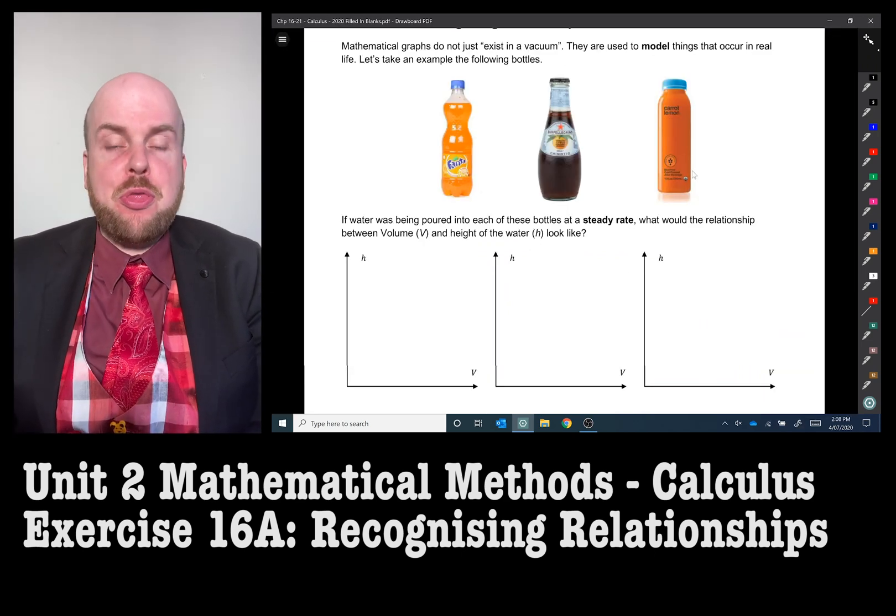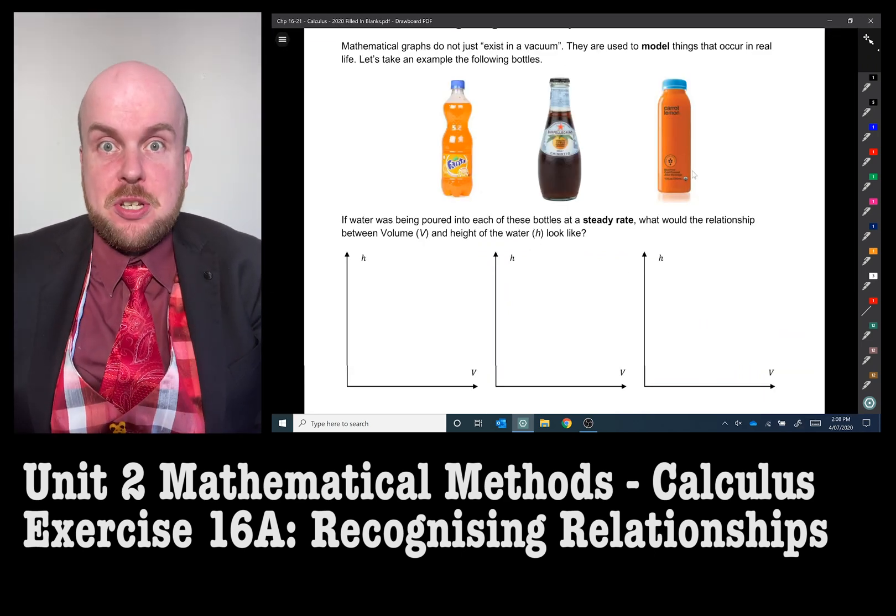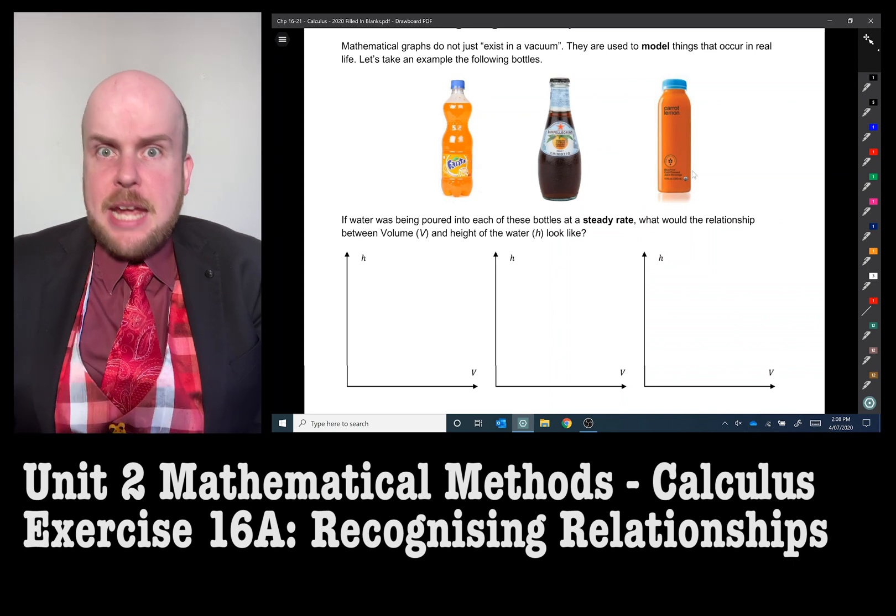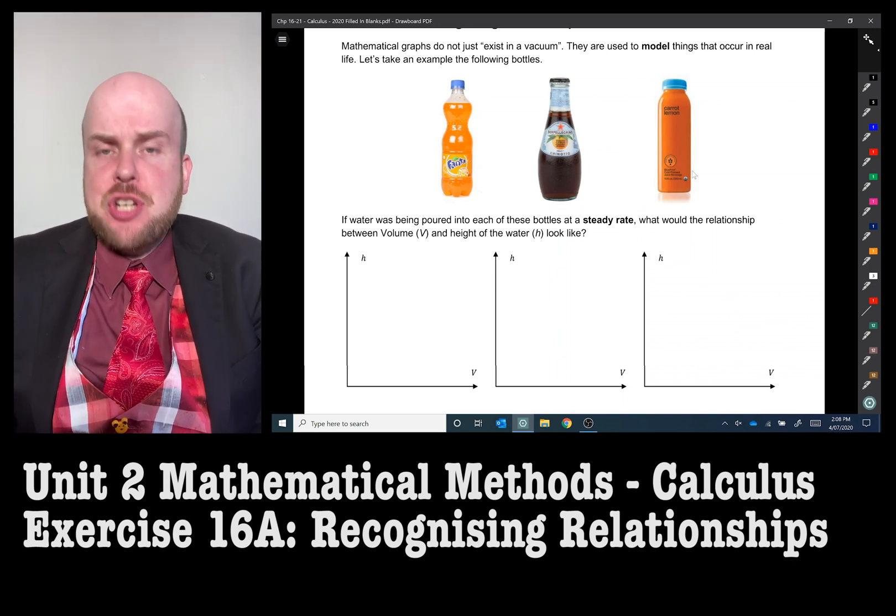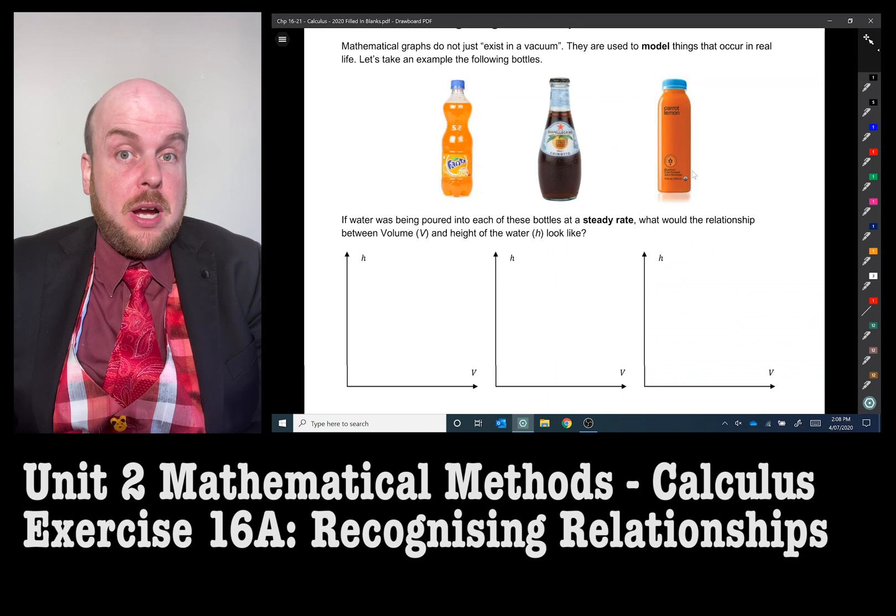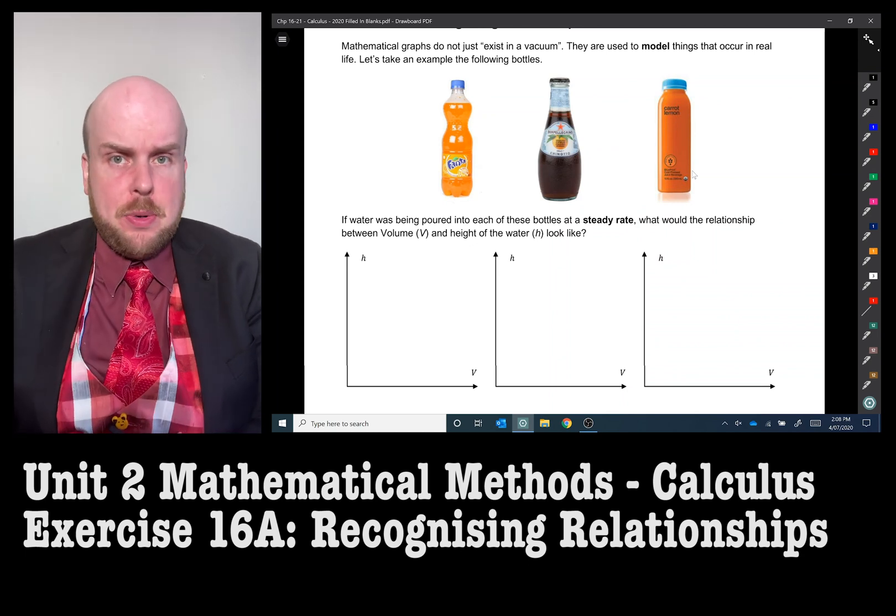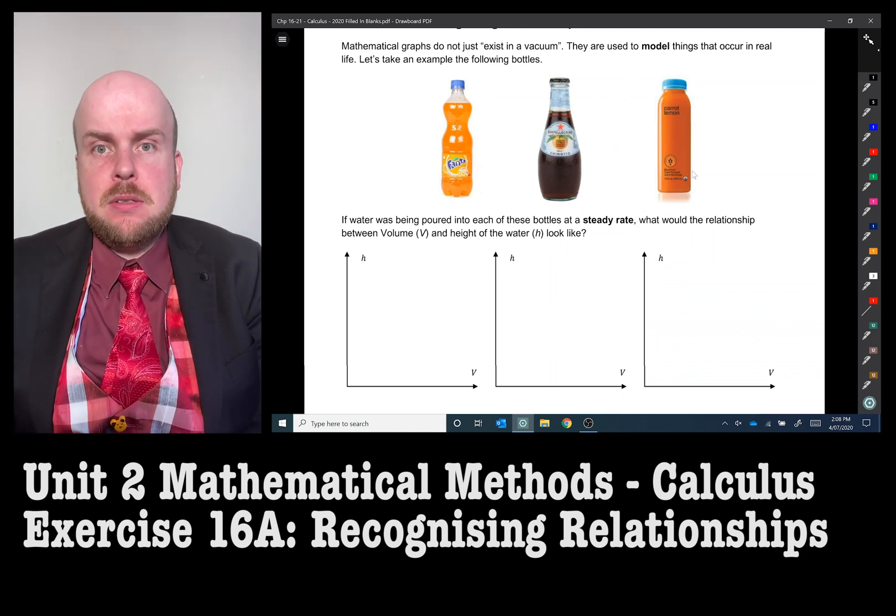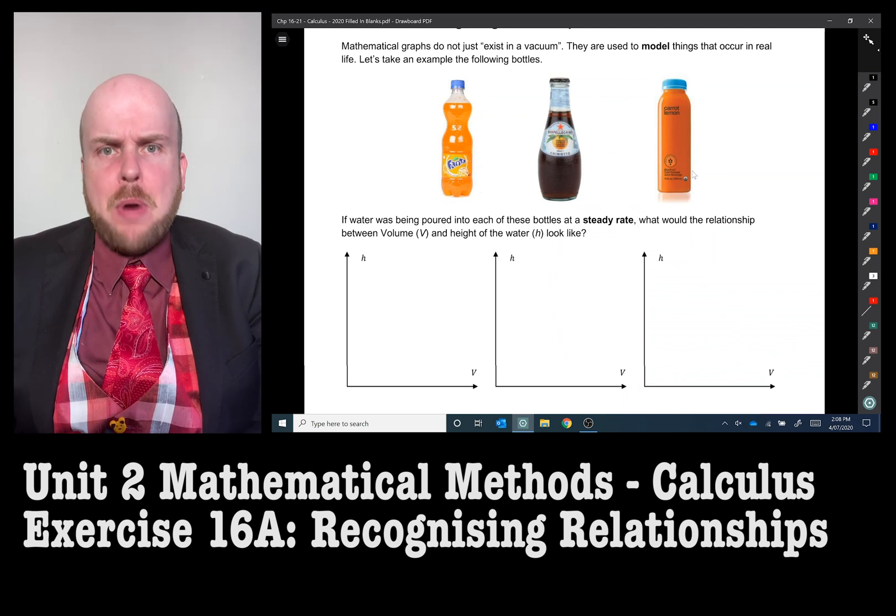In this example, I've got three bottles of various delicious beverages. Each one, the bottle is a different shape. And I need to describe if I was to pour liquid into each of these bottles, what would it look like as a graph?